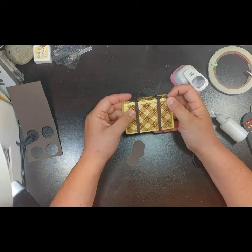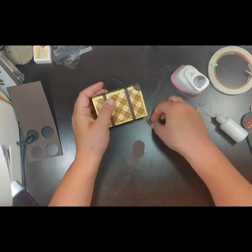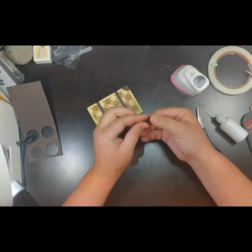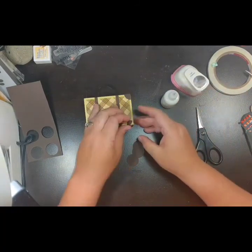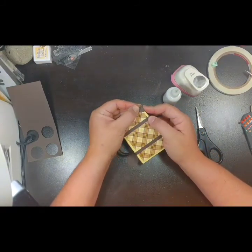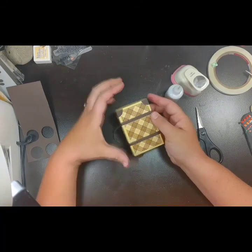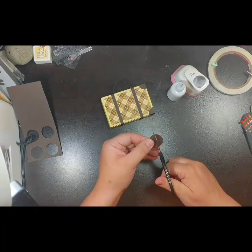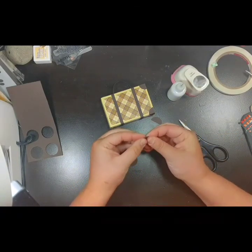I used liquid glue for this because I think it holds the folded thick cardstock onto the corners of the project a little bit better. But again, if you have a favorite adhesive you think would work better, feel free to try out whatever you want.